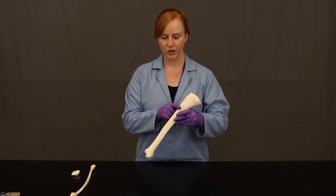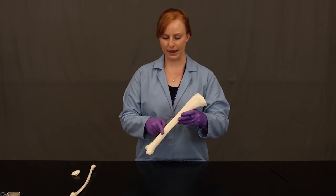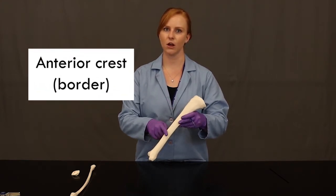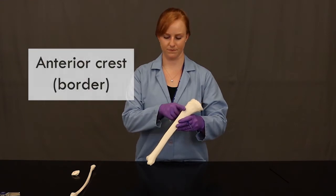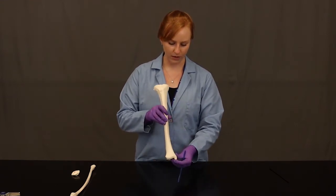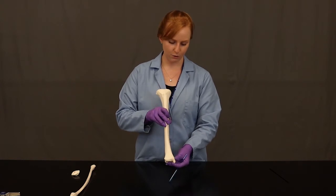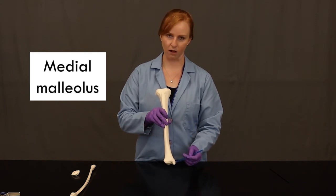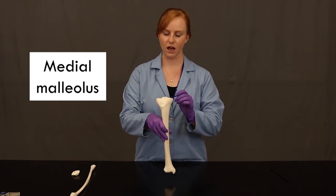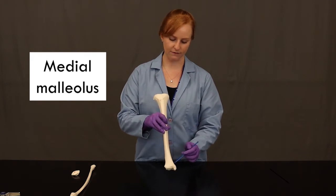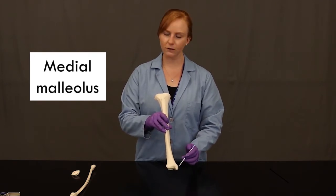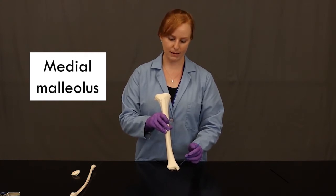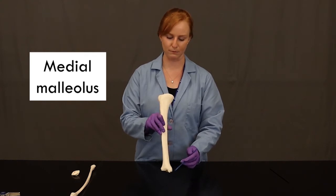Down at the bottom, we have this big projection here called the medial malleolus. This is how I could tell which side on the top was medial versus lateral — because down here we have that big medial malleolus. You can actually feel this on yourself: if you feel the medial side of your ankle, you'll feel a big bony projection there, and that's this medial malleolus.